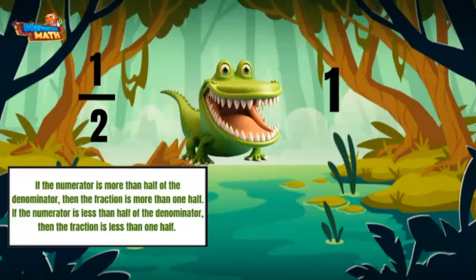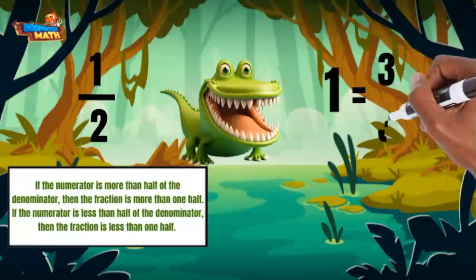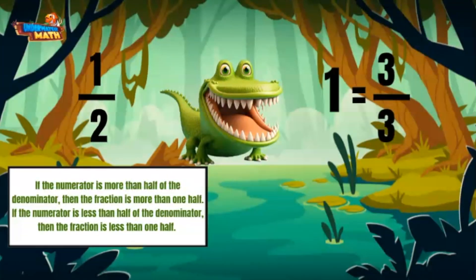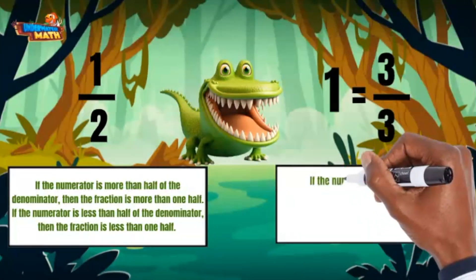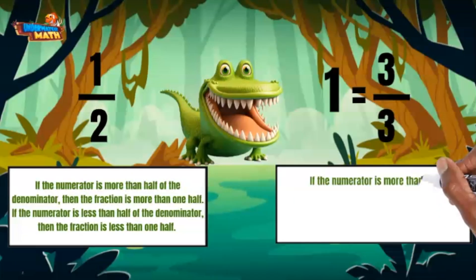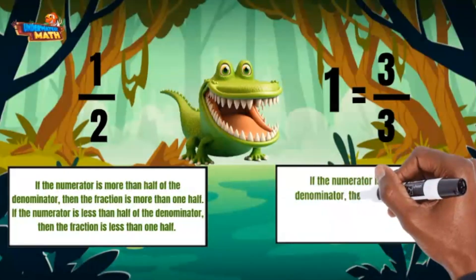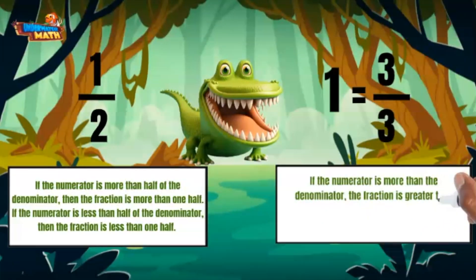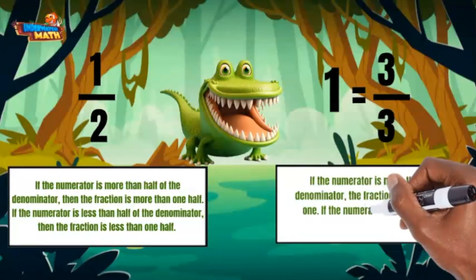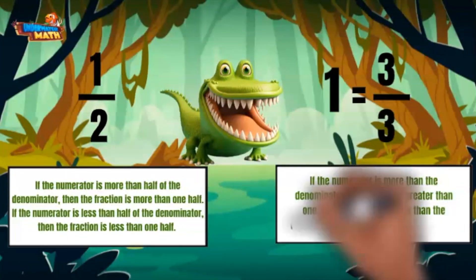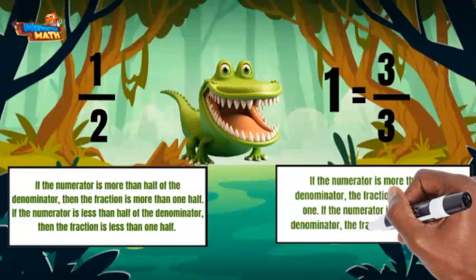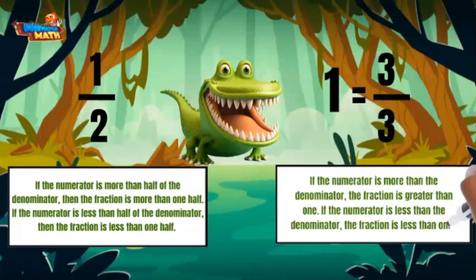Any fraction where the numerator and denominator are the same, like three thirds, also represents one. If the numerator is more than the denominator, the fraction is greater than 1. If the numerator is less than the denominator, the fraction is less than 1.